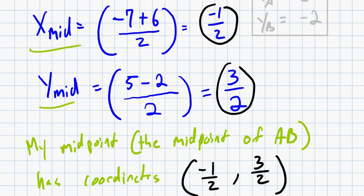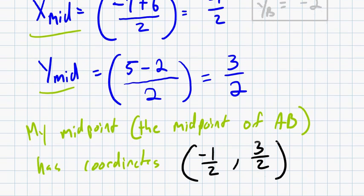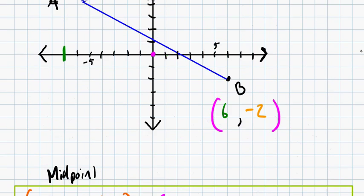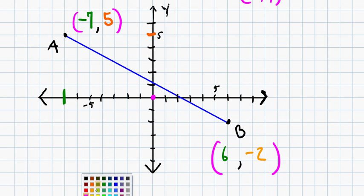And now that I have them, all I need to do is go and find out where this is. So negative 1 half, 3 halves. So negative 1 half means I want to go half a step to the left. Alright, and 3 halves means I want to go 1 and a half steps up, which looks like it's going to put me right about there. There's my midpoint. Let's call it M. And it has coordinates negative 1 half, 3 halves.